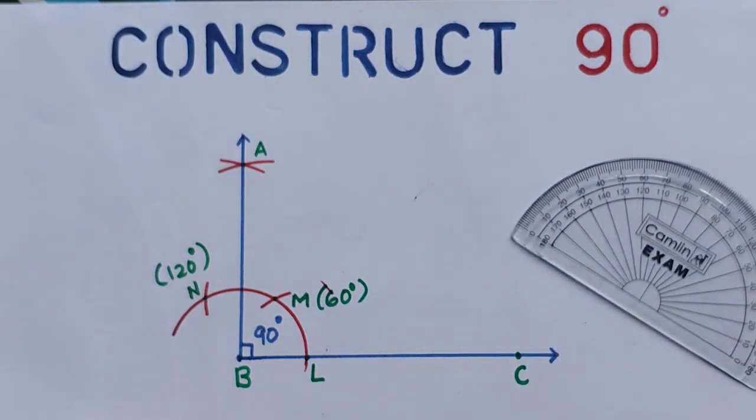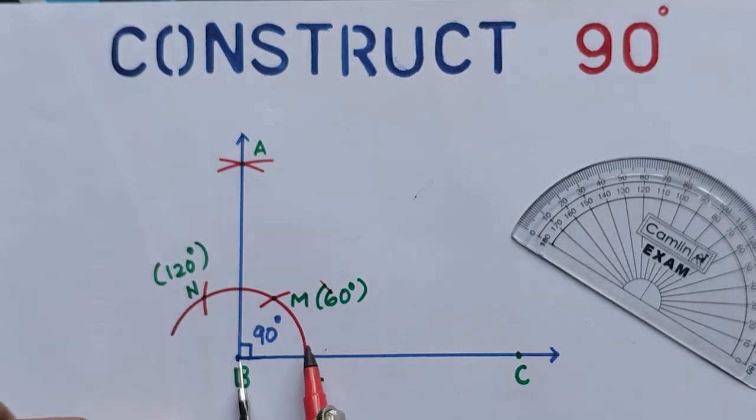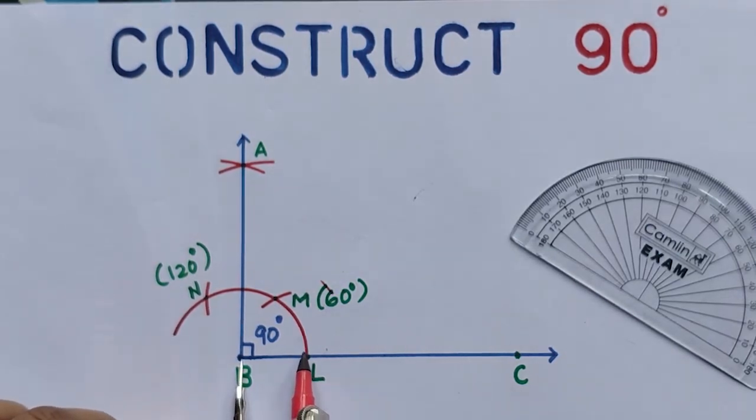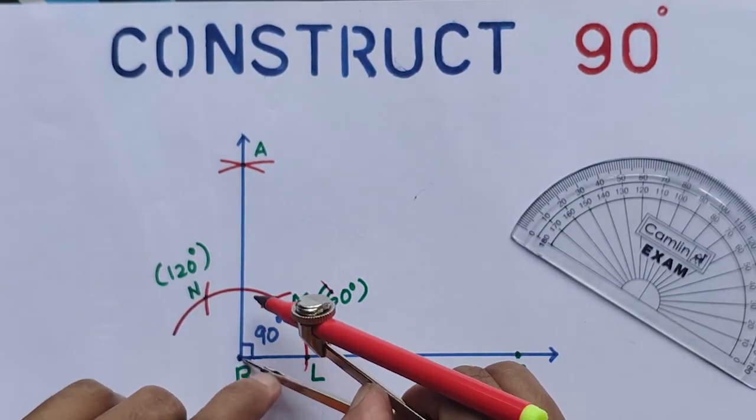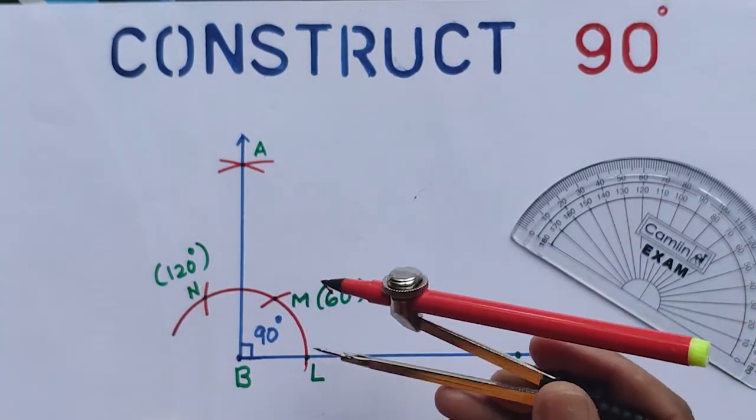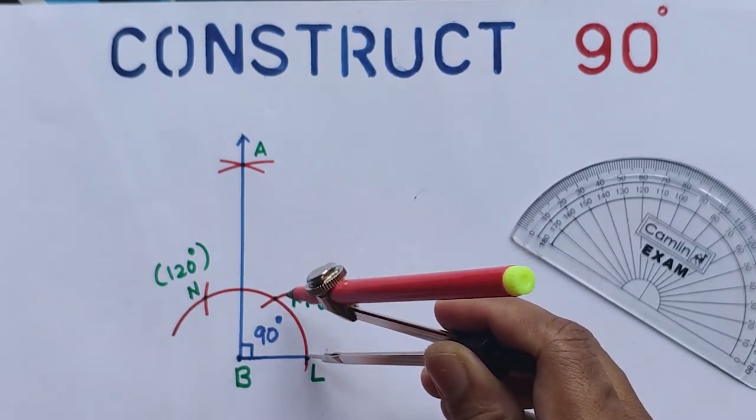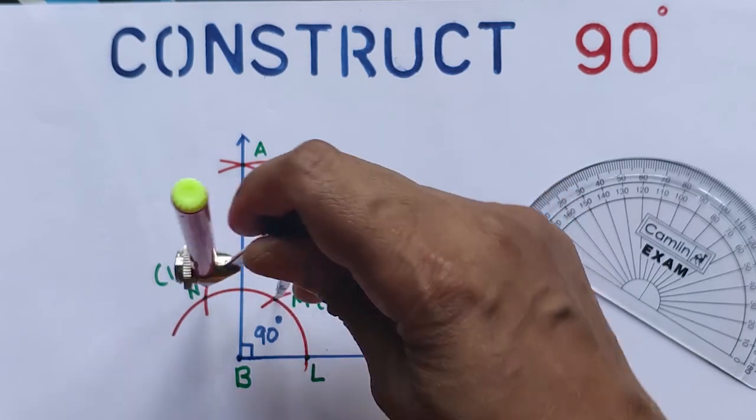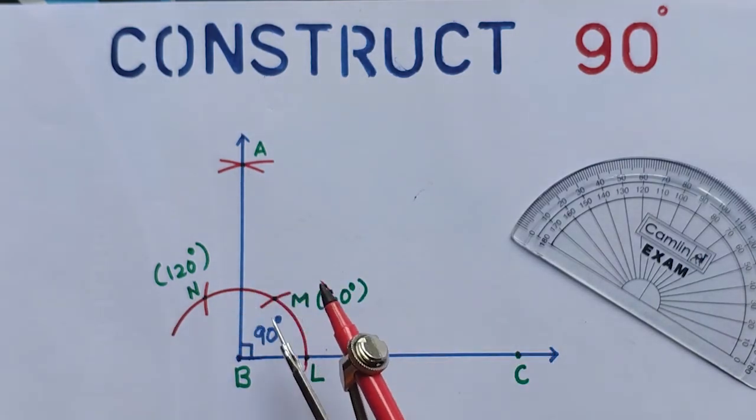Once again I will explain. First we have to draw a ray, name of that ray is BC. Then place the metal tip on B and take any radius, draw an arc, a little bit big arc. Then without changing the compass, place the metal tip on L, draw an arc. That means we have constructed 60 degrees. Then again one more 60 we have to construct, that means it will be 120.